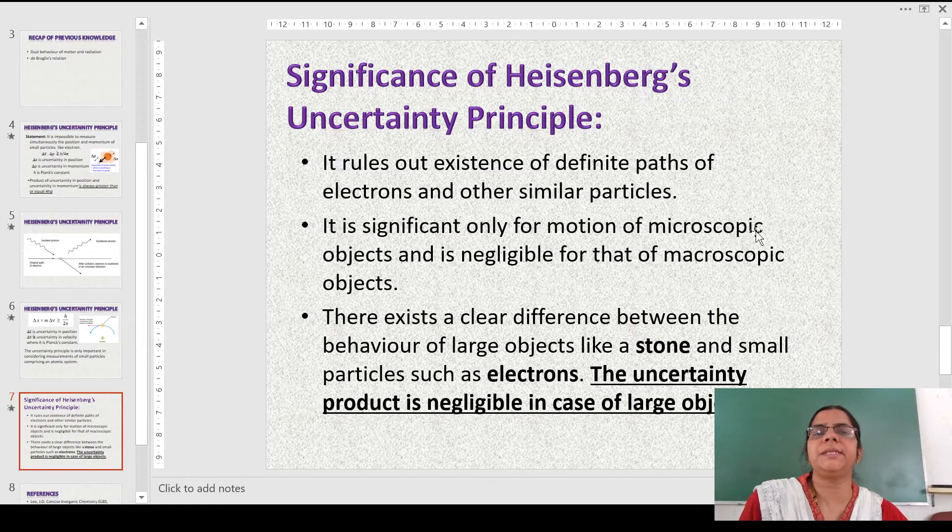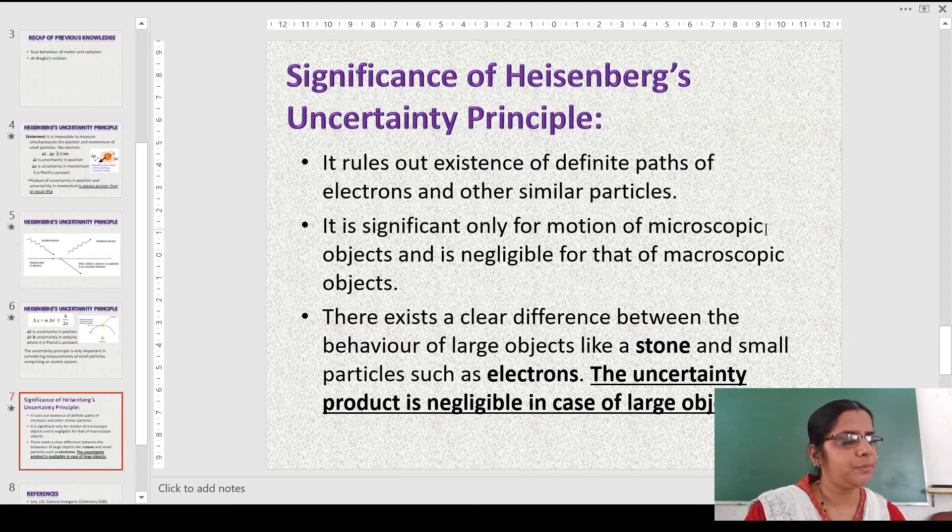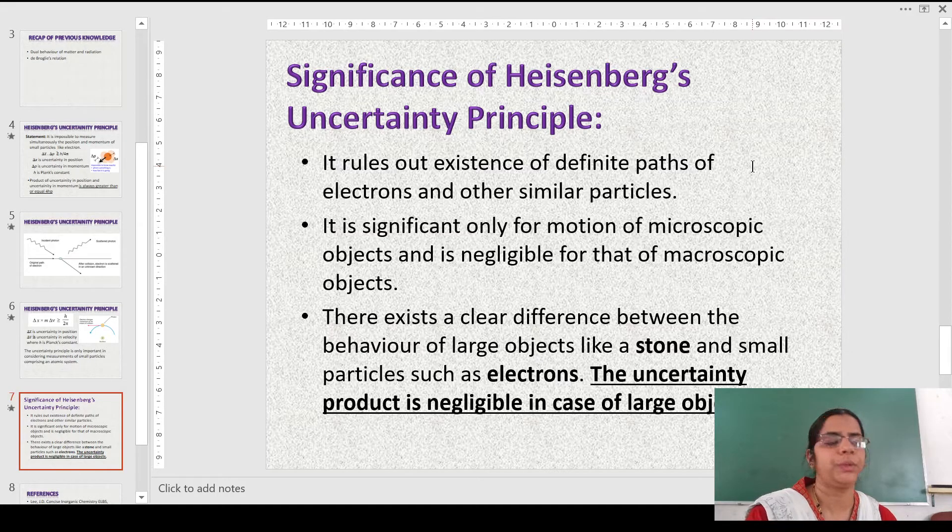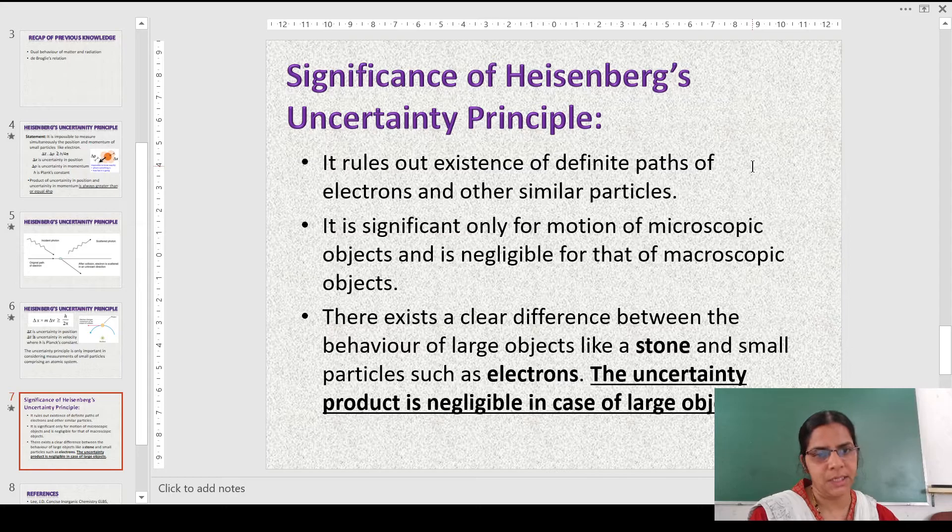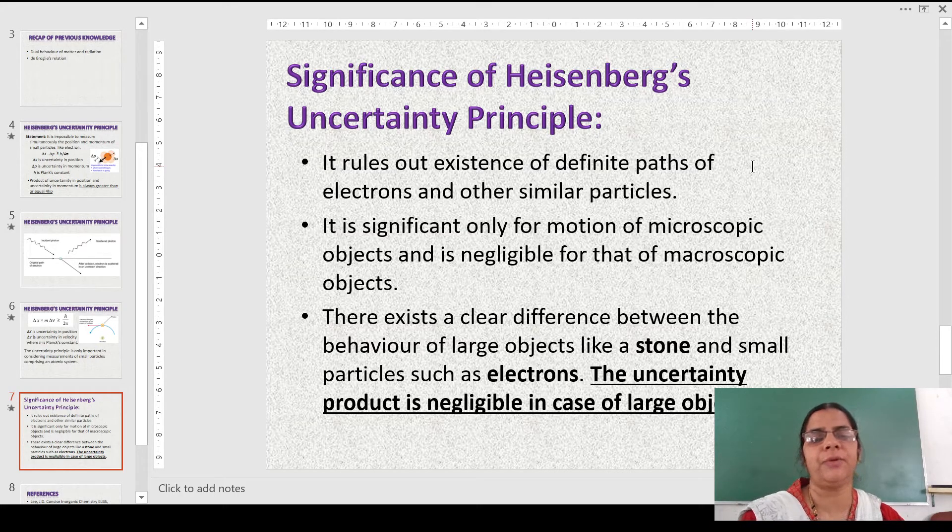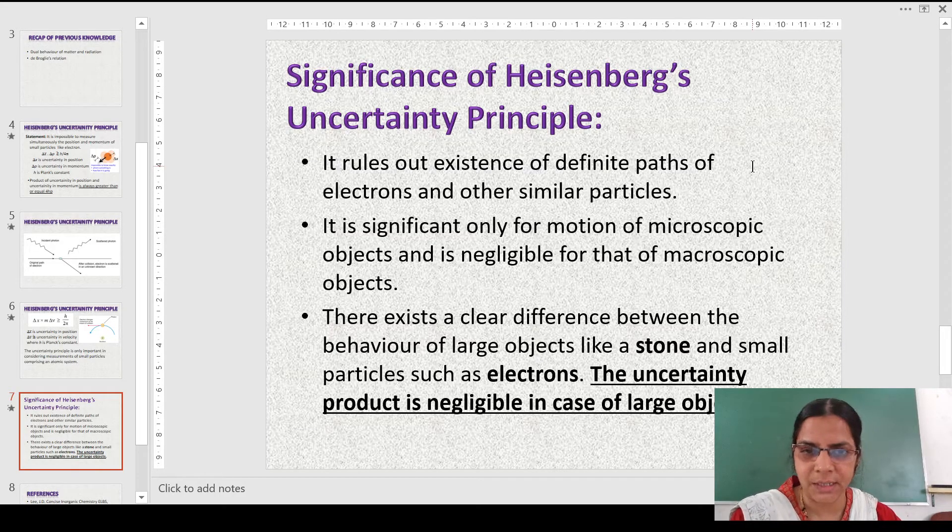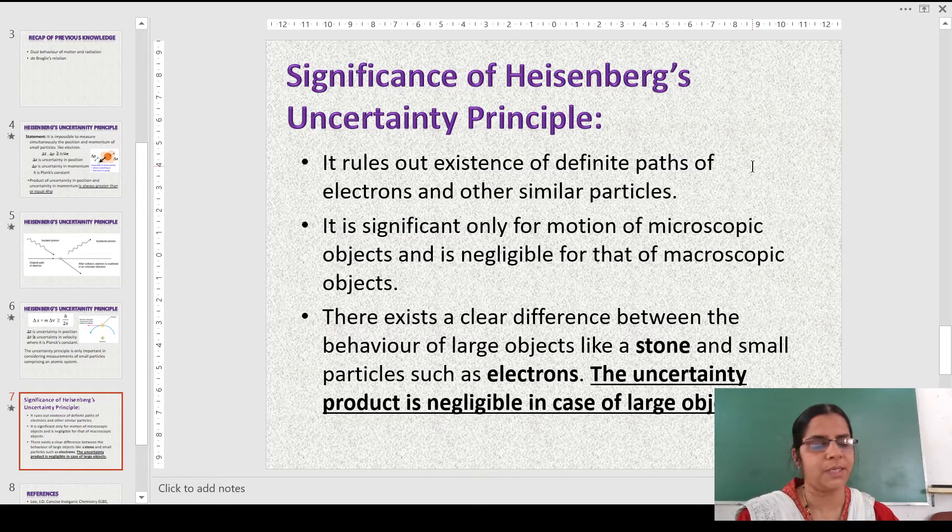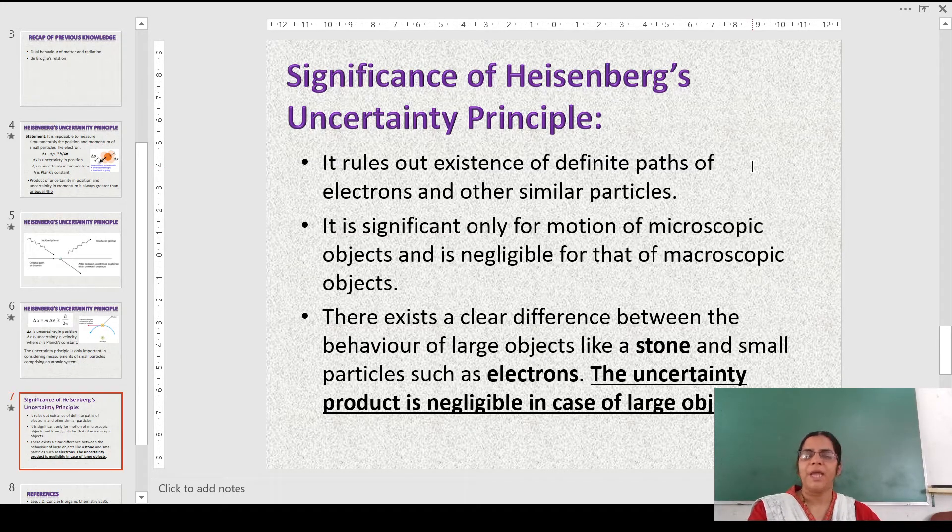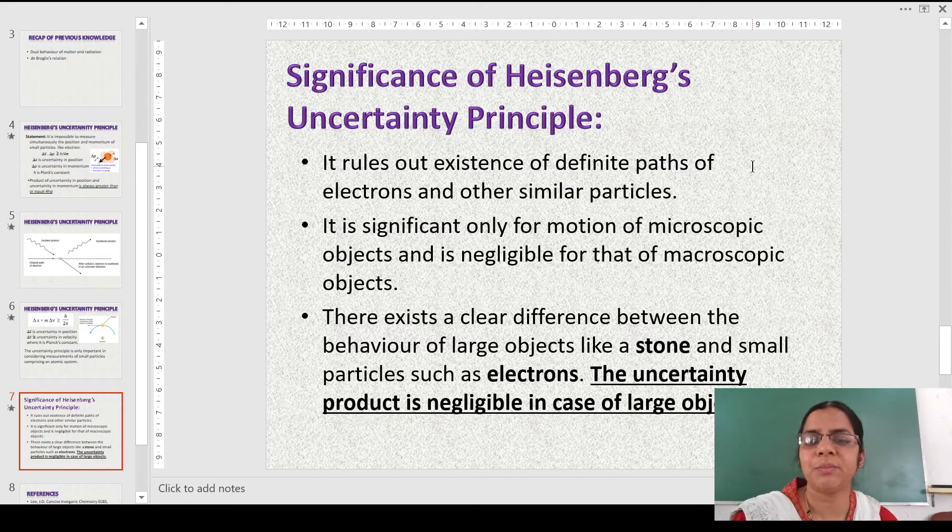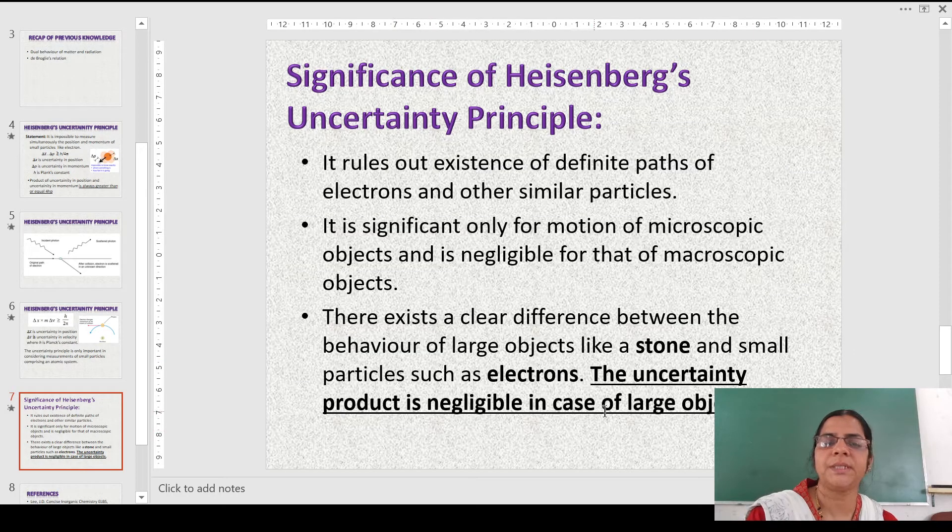Now let us understand the physical significance of this Heisenberg's Uncertainty Principle. It is very clear that in case of a Bohr model, which I just now have shown, that the electron is moving with fixed velocity in fixed orbits, it cannot be accepted because if one is accurate, there is uncertainty in the other one. Like if you fix the position of the electron, its velocity cannot be measured, or if we measure the velocity properly, the position may change any time. Therefore, it is impossible to know both the position as well as the velocity of any one electron due to its small size. But this uncertainty product is negligible in case of large objects like stones.